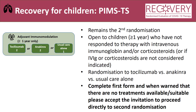Recovery remains open for those children with PIMS-TS — for those involved in recovery previously, this is known as the second randomisation. This is only open to children who are greater or equal to one year of age, who have not already responded to therapy with intravenous IVIG or corticosteroids, or if IVIG or steroids are not considered indicated. The randomisation is to tocilizumab, anakinra or usual care alone. Please note that because of the way the system was initially set up, you must first complete the first form and will be warned there are no treatments available or suitable, and then please accept the invitation to proceed directly to the second randomisation.